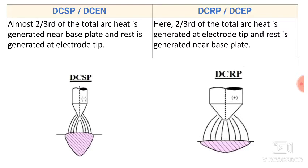In reverse polarity, two-thirds of the total arc heat is generated at the electrode tip and the rest is generated near the base plate. As the work piece is connected to the negative terminal and the electrode to the positive terminal, electrons start moving from the base plate to the electrode and hence the maximum heat is generated at the electrode tip.